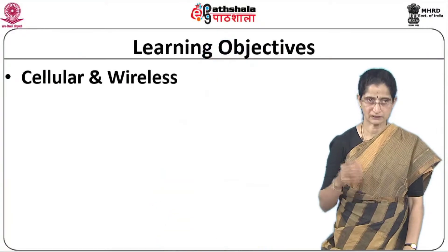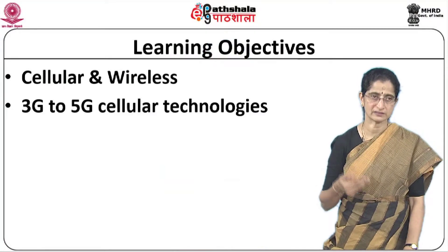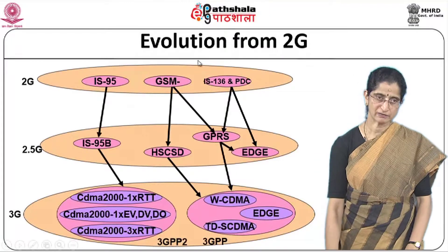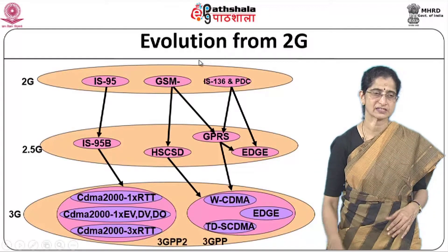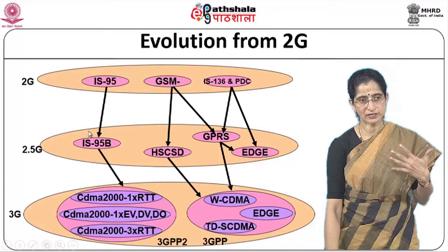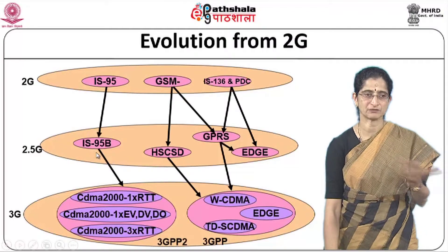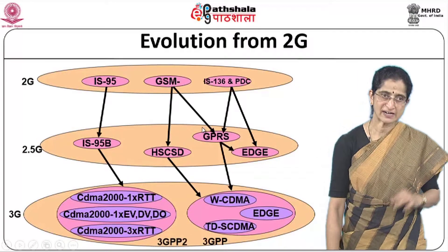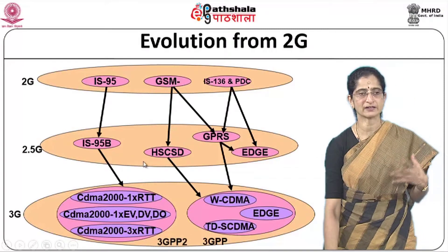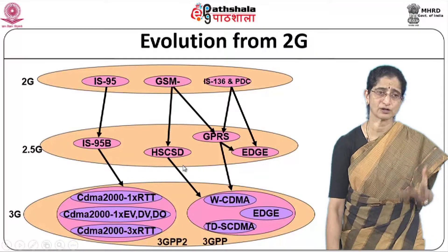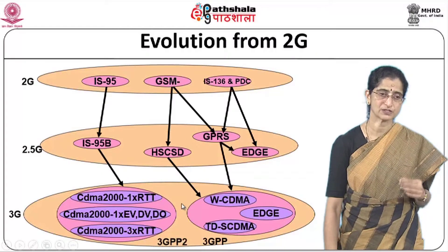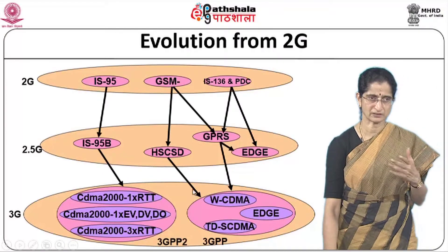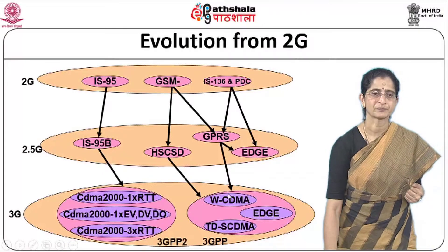We will start off with cellular and wireless, looking at 3G to 5G wireless technologies first, then move on to ZigBee. If you look at the evolution from 2G to 3G, there is actually a 2.5G that existed during the transition. There are different standards that evolved as part of this, with many different terminologies. Once you understand what these terminologies mean, it becomes easy to understand the overall evolution.